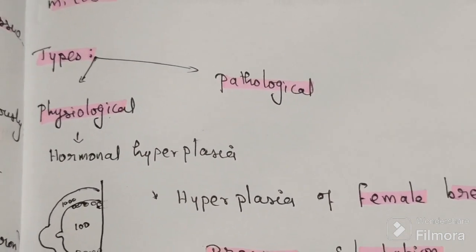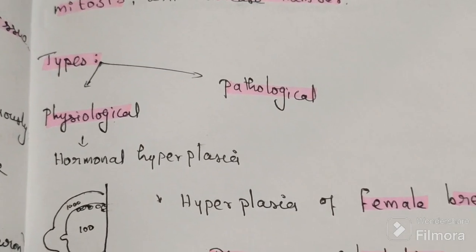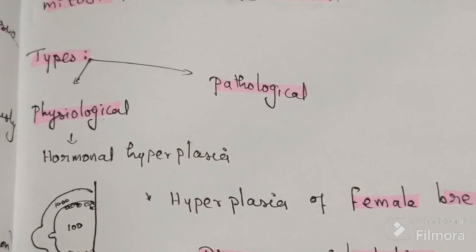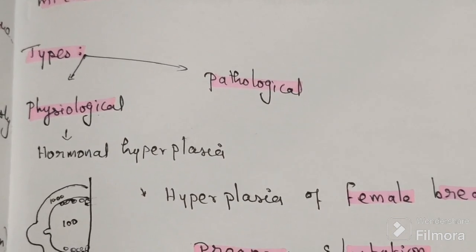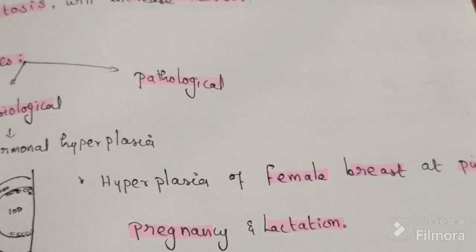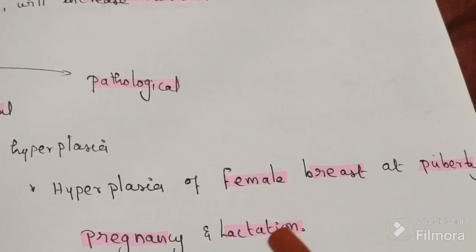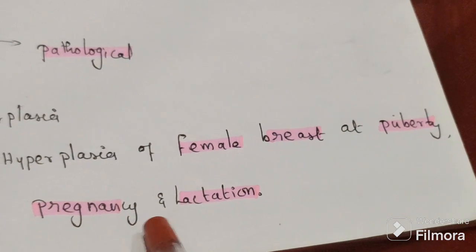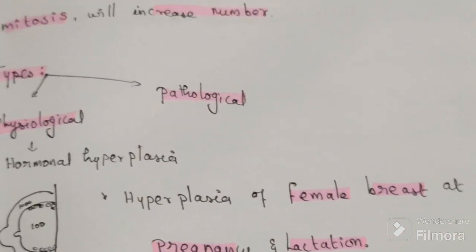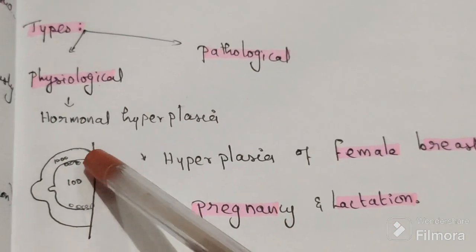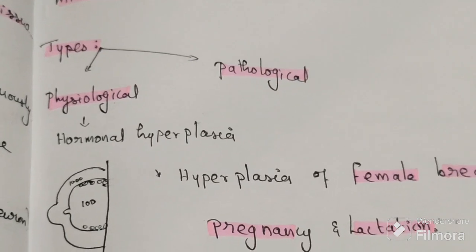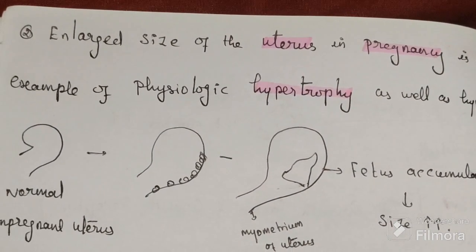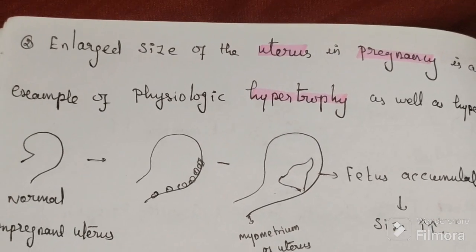Types of hyperplasia include physiological and pathological conditions. First is hormonal hyperplasia — for example, the female breast. During puberty, pregnancy, and lactation, the breast increases in size three times due to cell division inside — that is hyperplasia. Second is enlarged size of the uterus in pregnancy, which is an example of both physiological hypertrophy and hyperplasia.